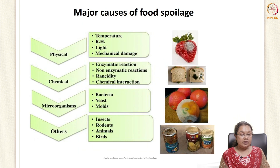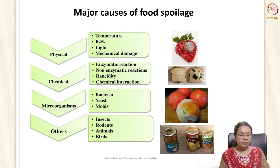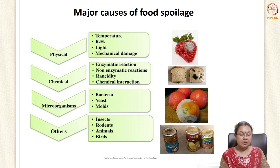The major causes of food spoilage can be categorized into physical, chemical, microbial, and others. Physical parameters responsible for spoilage include temperature, relative humidity, light, and mechanical damage. Chemical spoilage may happen due to enzymatic reactions, non-enzymatic reactions, acidity, and chemical interactions. Microbial spoilage is due to bacteria, yeast, and mold. Along with these, insects and rodents may damage food products. To select a packaging material, we must understand what specific spoilages may happen and from what the product needs to be protected. For example, bread must be protected from moisture to prevent mold growth.